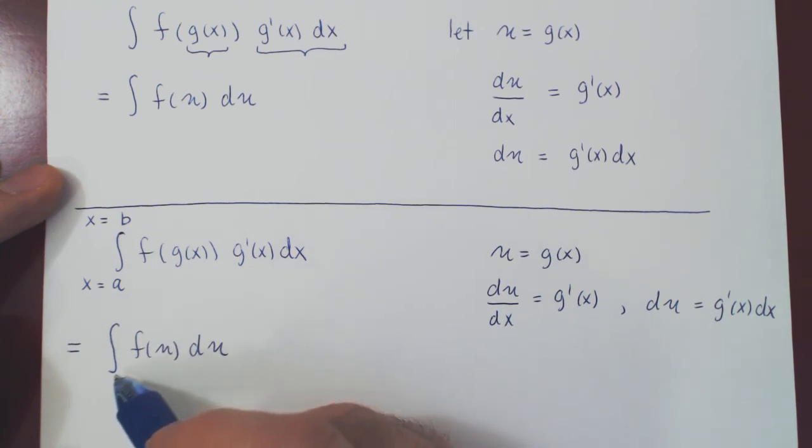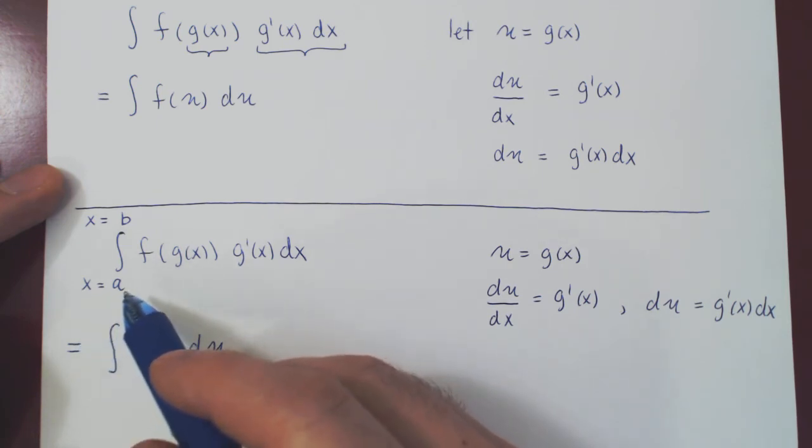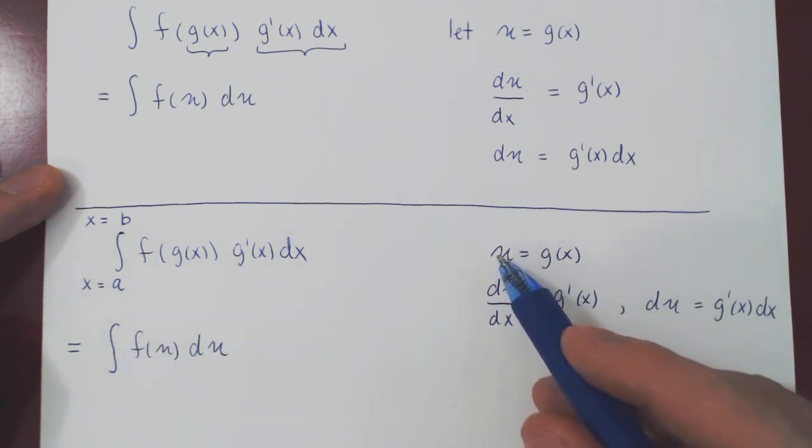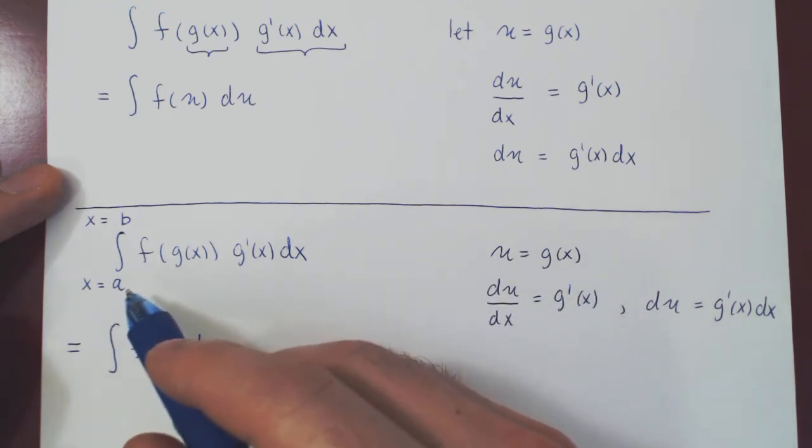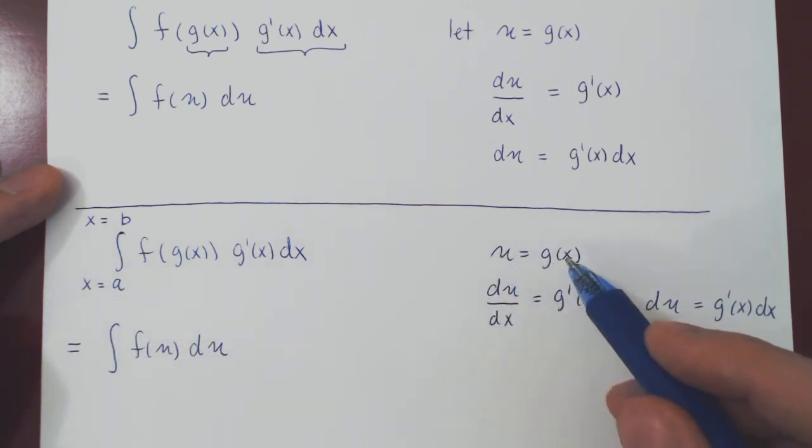So look at the new lower bound of integration. We're asking, what is u equal to when x equals a? Well, if you think of it, u equals g of x for any x. So if x equals a, then u is g of a.